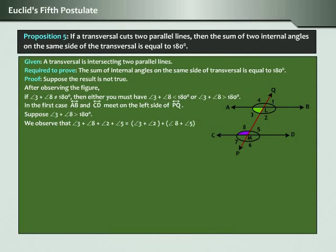Suppose angle three plus angle eight is greater than 180 degrees. We observe that angle three plus angle eight plus angle two plus angle five equals (angle three plus angle two) plus (angle eight plus angle five), which equals angle ALB plus angle CMD, which equals 180 degrees plus 180 degrees, which equals 360 degrees.